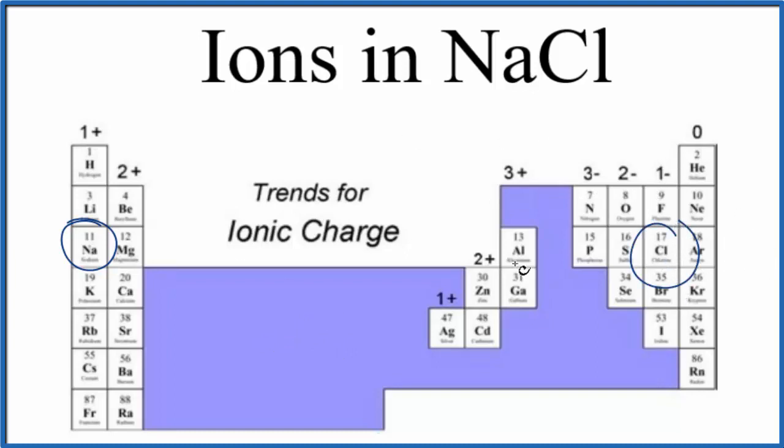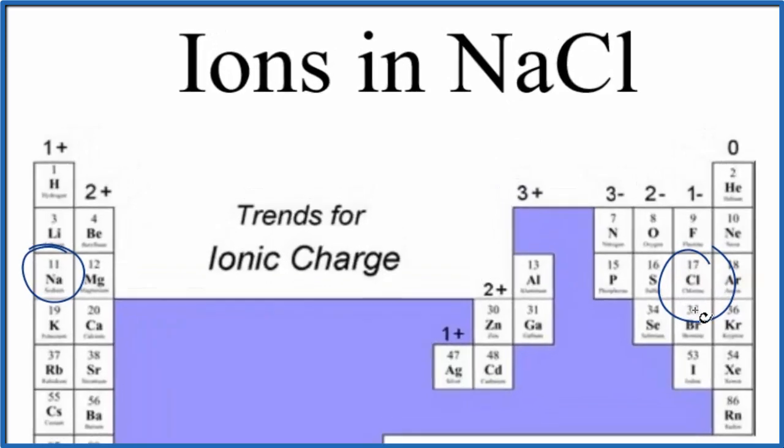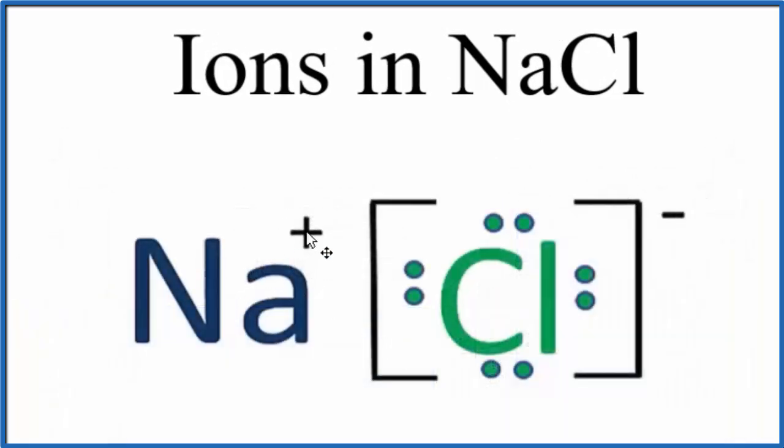So we could write the structure for NaCl like this in order to show the ions. We have the sodium ion, that's the 1 plus, and the chloride ion, that's the negative.